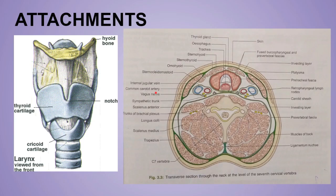The attachments of the pre-tracheal fascia: superiorly, it attaches to three main things — the hyoid bone, thyroid cartilage, and the cricoid cartilage. These three things: hyoid bone, thyroid cartilage, and the cricoid cartilage.